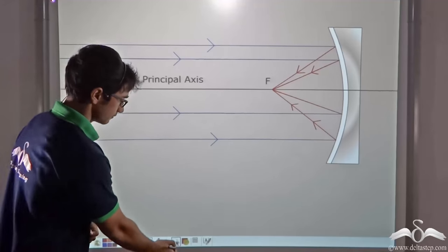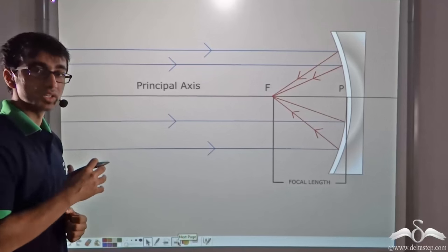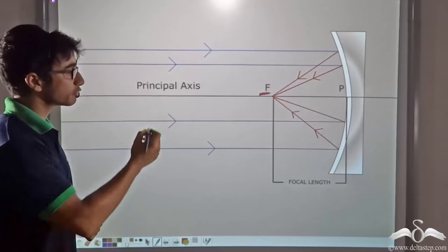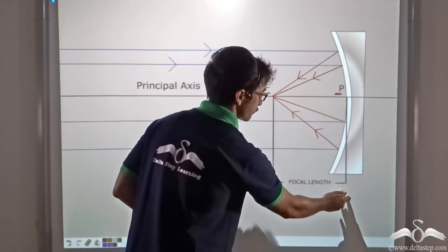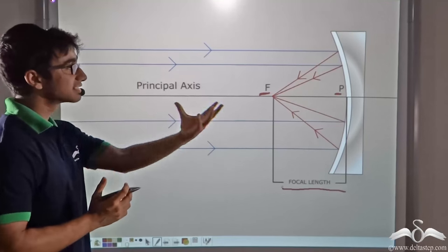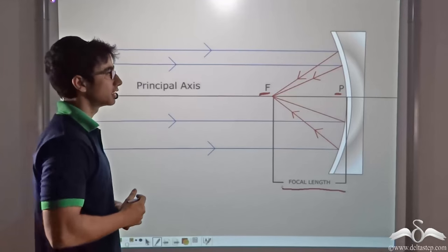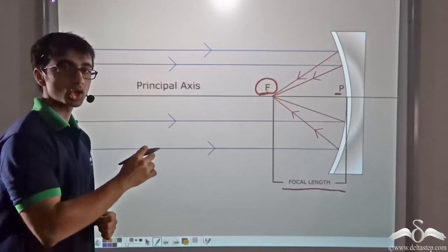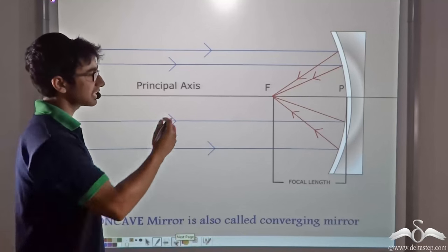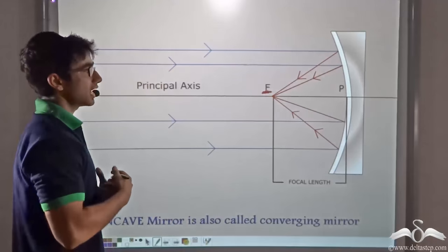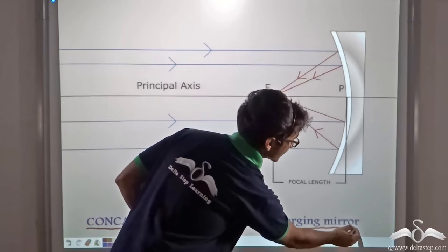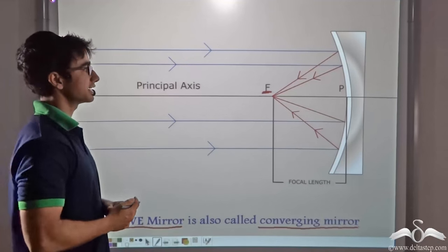So what do you think this point is called? This point where the light rays converged and got focused is known as the focus of the concave mirror. The length from the focus of the concave mirror to its pole is known as the focal length of the concave mirror. Always remember that whenever light rays parallel to the principal axis are incident on the concave mirror, they converge at the focus. So we can say that a concave mirror is a converging mirror, because light rays after reflection converge at the focus.